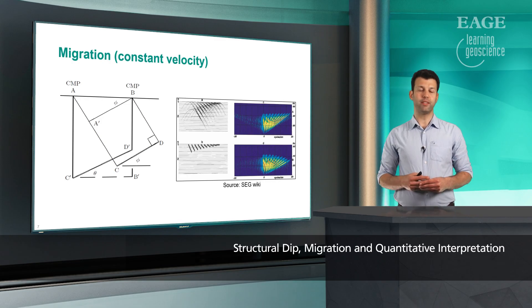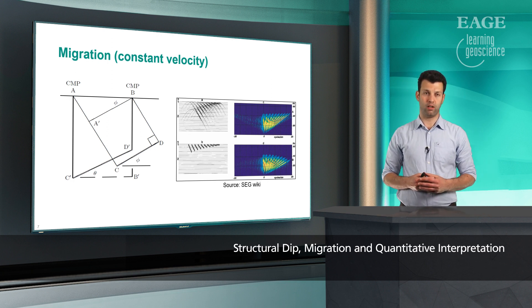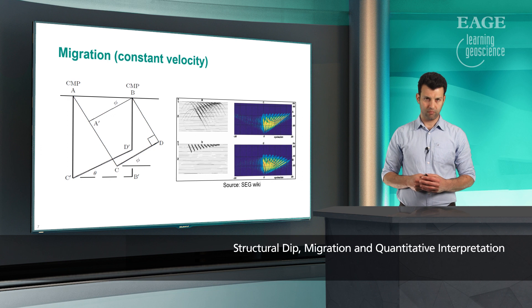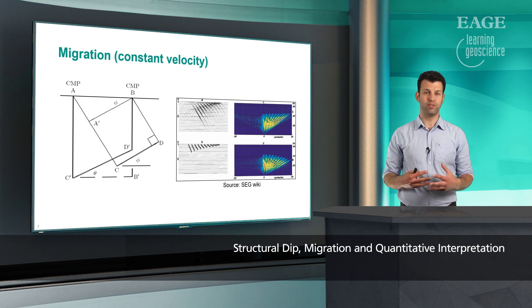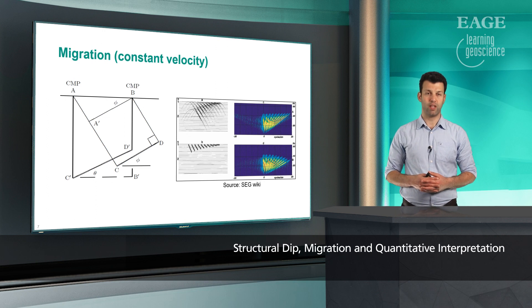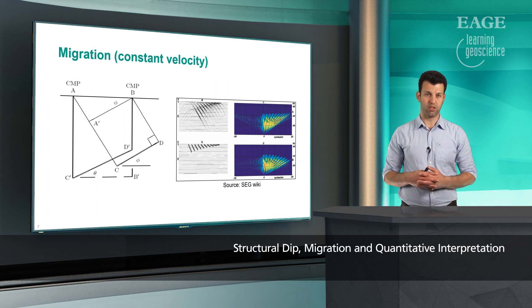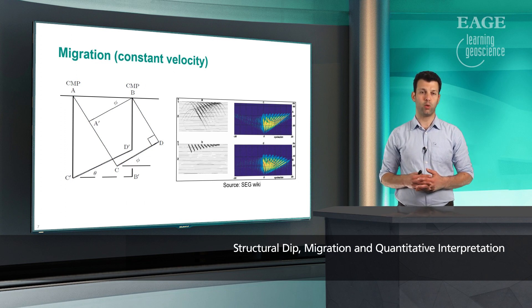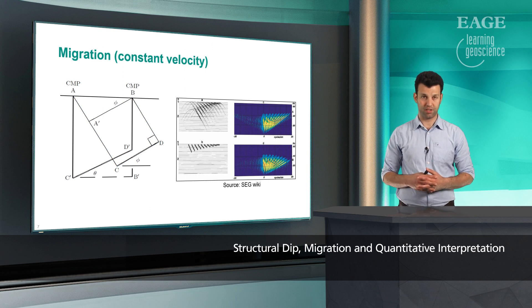So let's go back to some basics. The image on the left shows a dipping event with normal incident rays on the stack section, and also on the migrated section. Stolt, for the first time, for a constant velocity medium came up with the equation that relates the stack and migrated images, and that is the tangent of theta equals the sine of phi angle in this image.